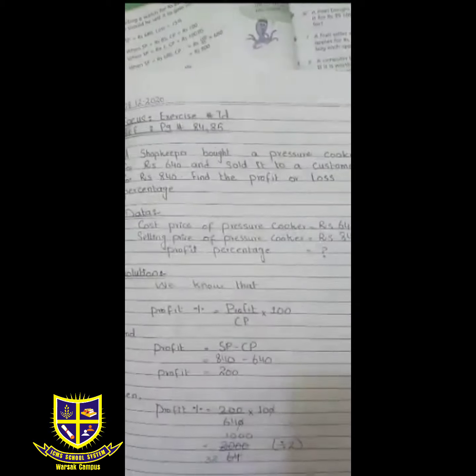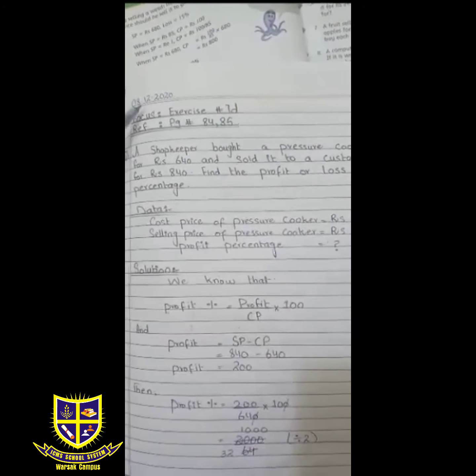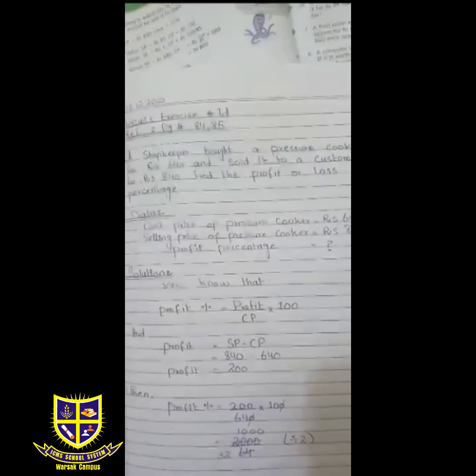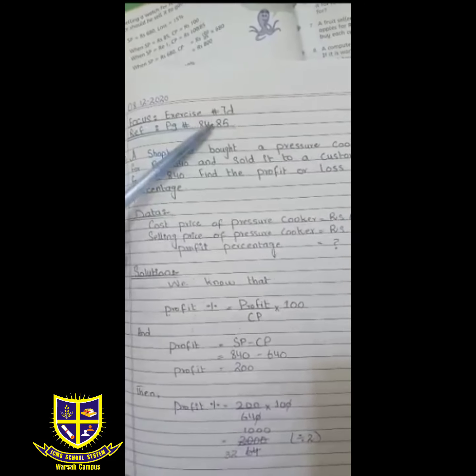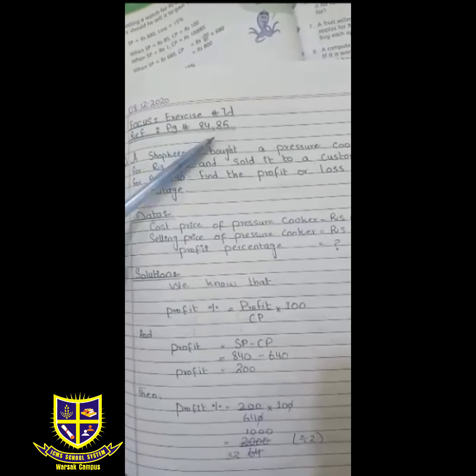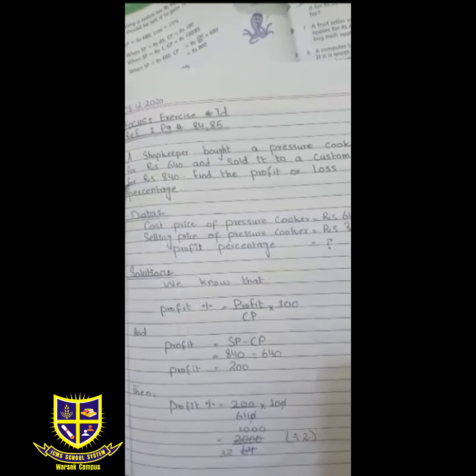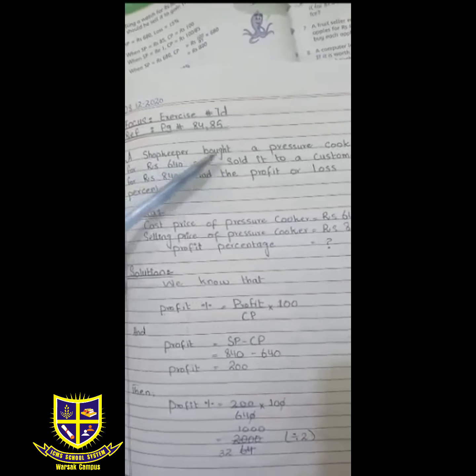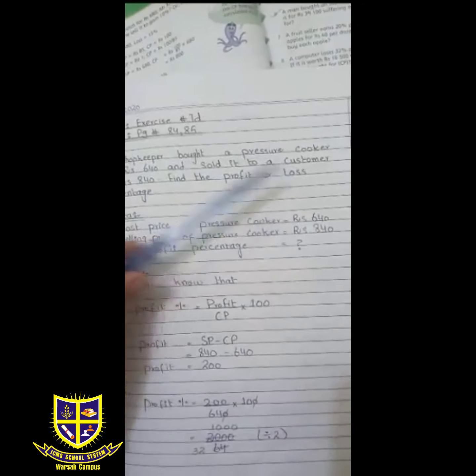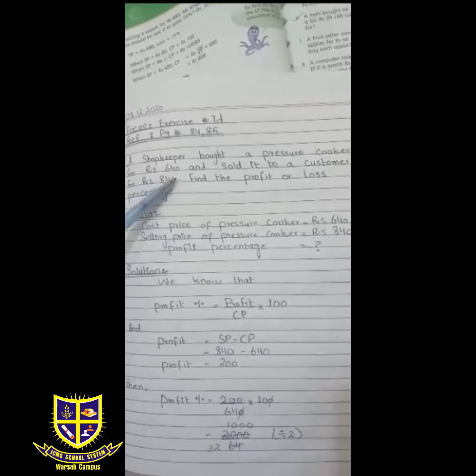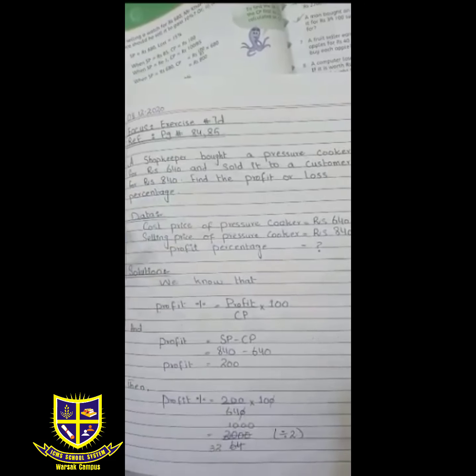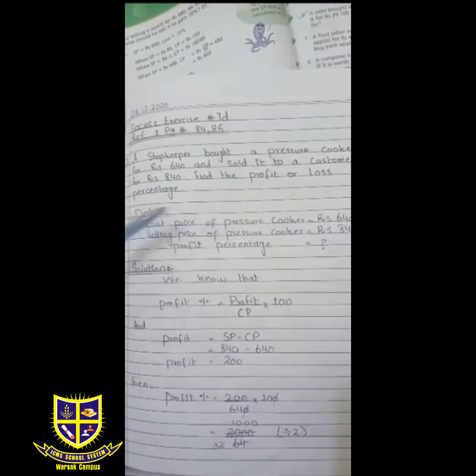First you write date: 8-12-2020. Exercise 7D, reference page number 84 and 85. Question: A shopkeeper bought a pressure cooker for rupees 640 and sold it to a customer for rupees 840. Find the profit or loss percentage.